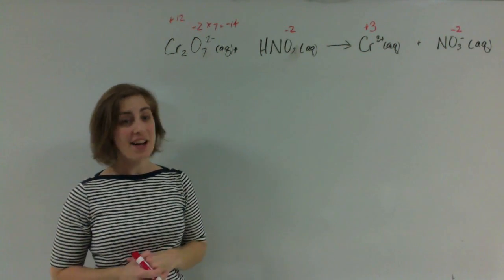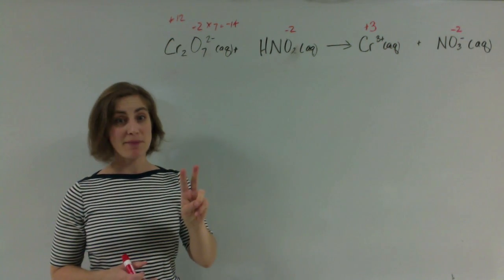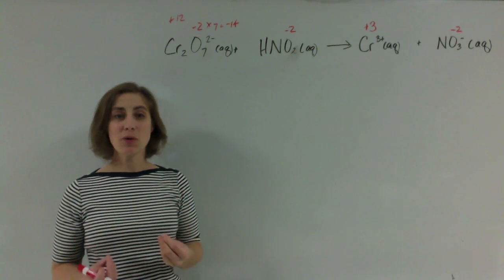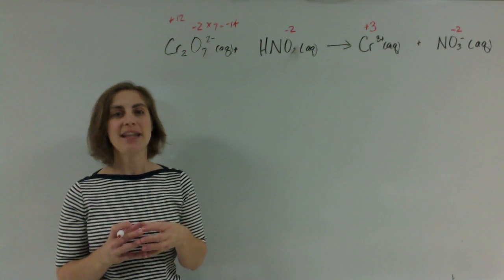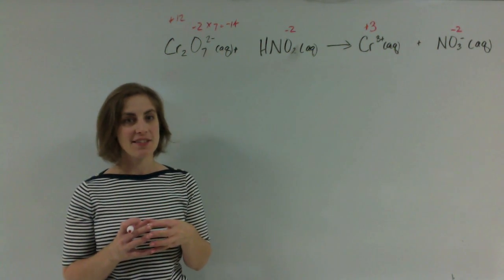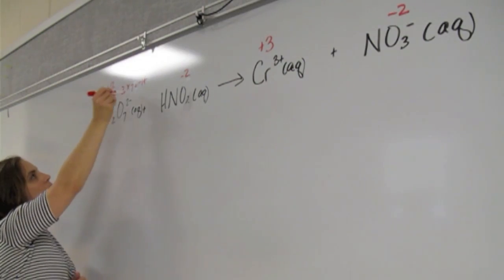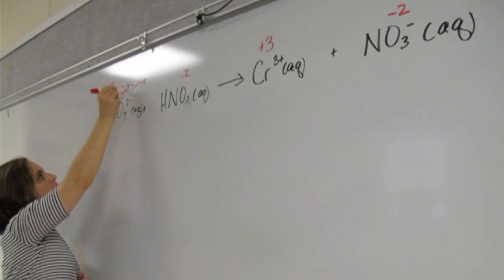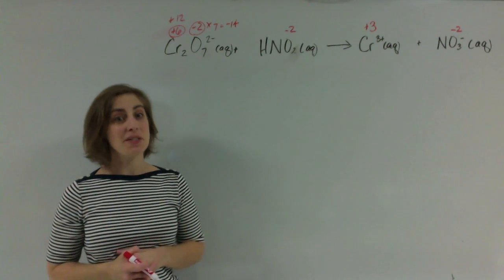Well that's great, but is that the oxidation state of chromium? Nope. There are 2 chromiums in this one. So since there are 2 chromiums that add up to positive 12, that means each chromium has a positive 6 oxidation state. There you go. Now we're done with dichromate.